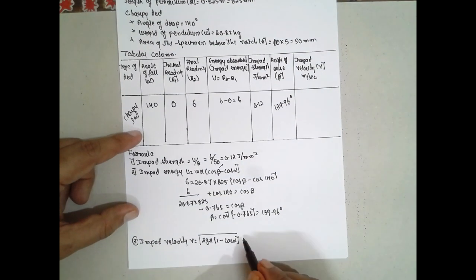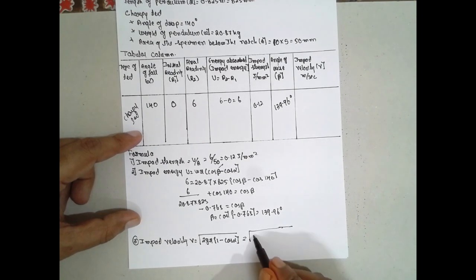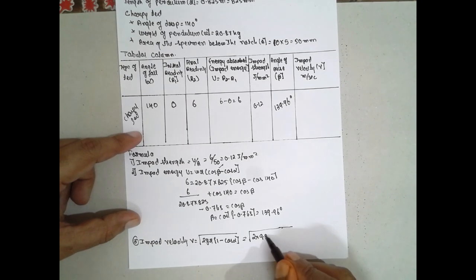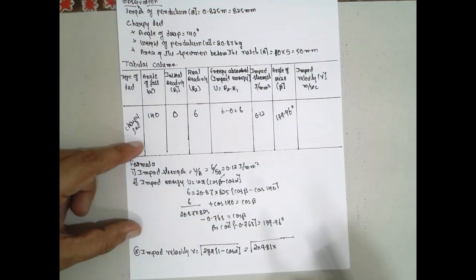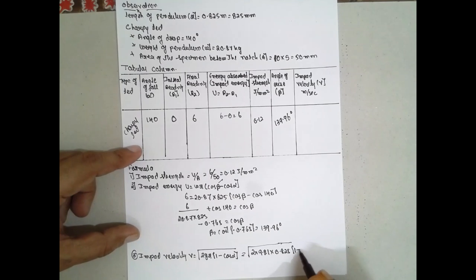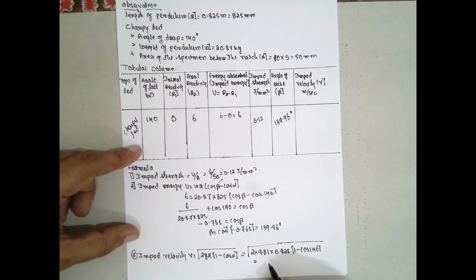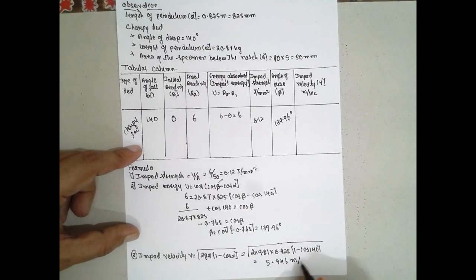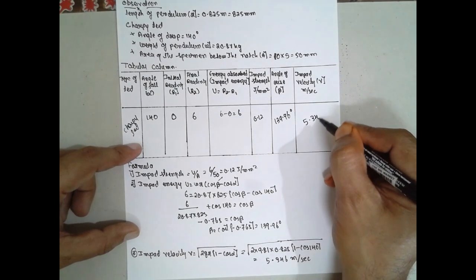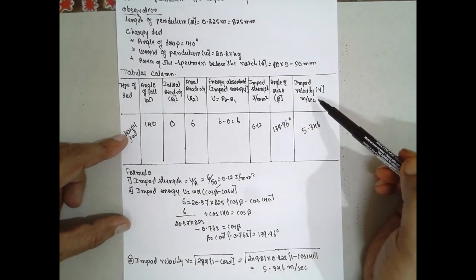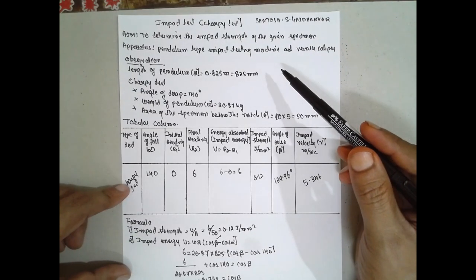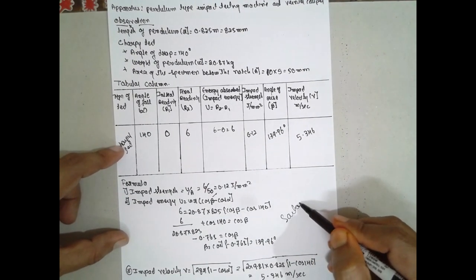Finally, we find the impact velocity using v = √(2gR(1 − cos α)), where g = 9.81 m/s², R = 0.825 m, and α = 140°. The answer is 5.346 meters per second. This is how you find the impact strength, angle of rise, and impact velocity for a Charpy test. I am Juntush Gaidankar, thank you very much.